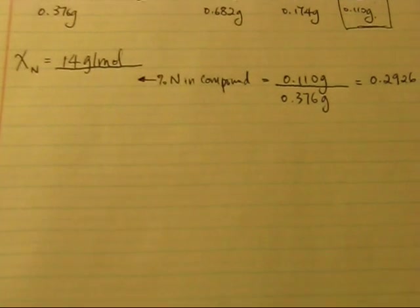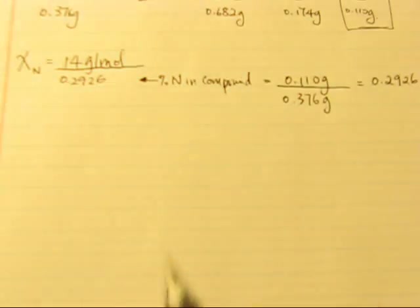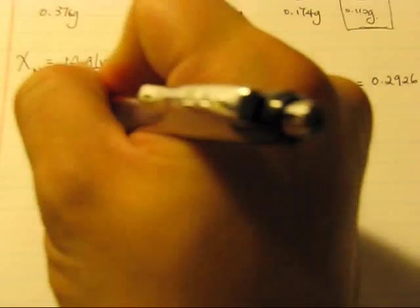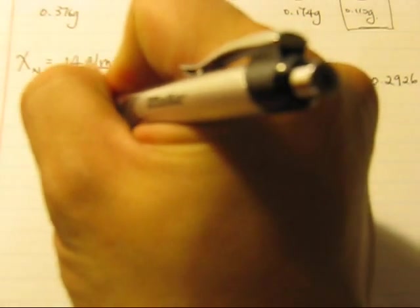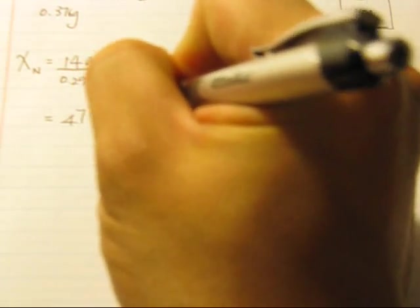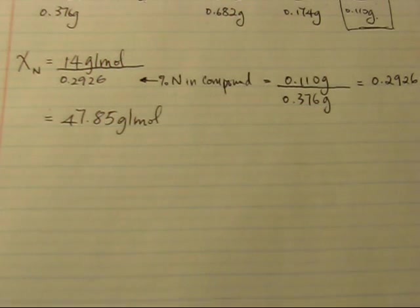And we can put this number into the denominator right here. And if you put the calculator in calculate, you'll find out that it is equal to 47.85, and don't forget the unit, 47.85 grams per mole.